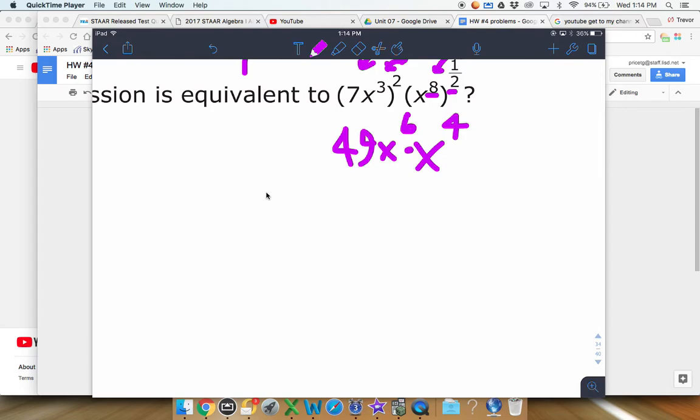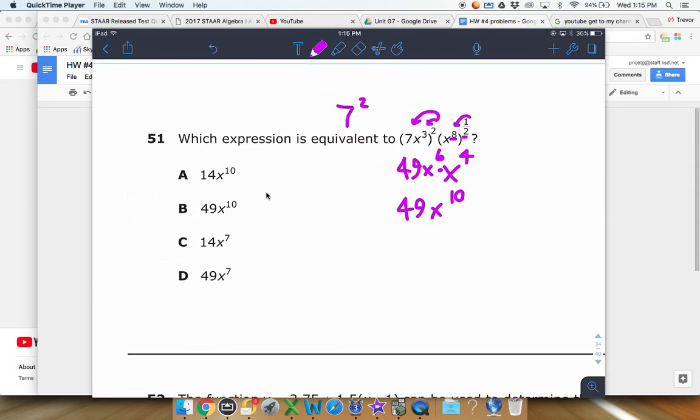So you're going to get 49, and then the x, once you multiply your powers, that's x to the sixth. Another rule says that if we have an x times an x with powers, we take the powers and then we add them up. So that'll be x to the tenth right there. And then I guess we just need to find the correct answer based off of that. So that one looks like it's B.